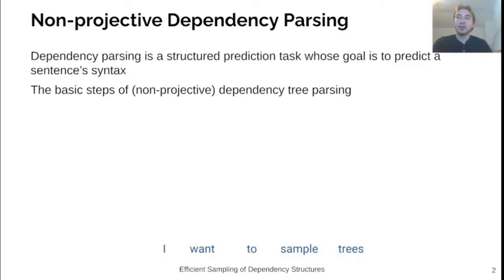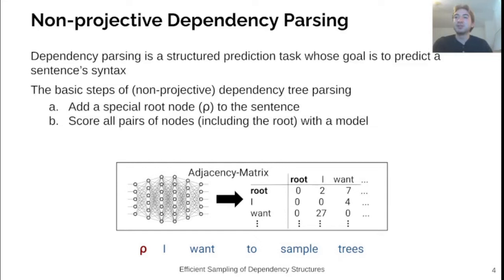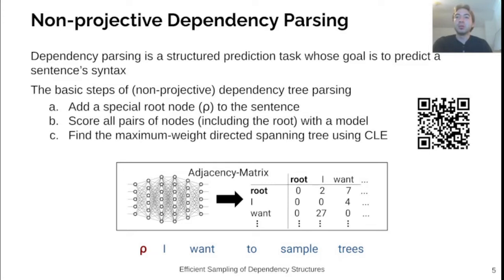First, a quick overview of graph-based dependency parsing. Dependency parsing is a task of predicting syntactic structure for a sentence, and graph-based dependency parsers work by converting a sentence into a typically dense graph where nodes are words and edges are possible dependency relations. We also add a root node to the sentence to mark the syntactic root of the dependency tree. We then compute the weight for all edges in the form of an adjacency matrix using a learned model such as a neural network.